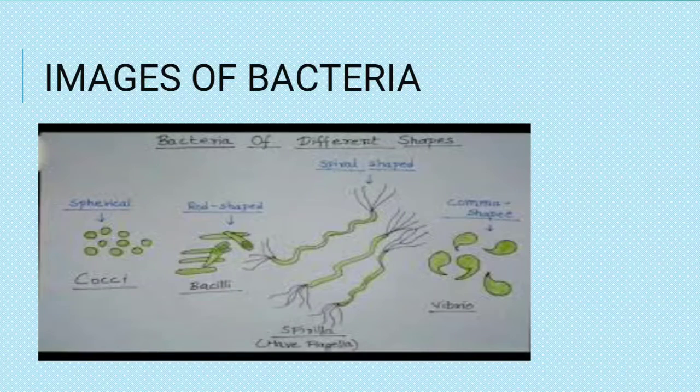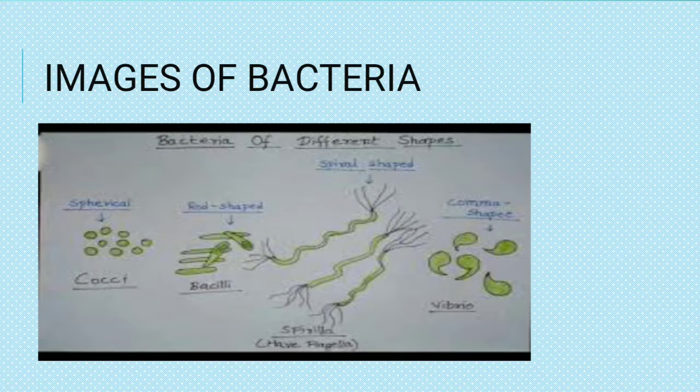First we will discuss about bacteria. Bacteria are very small and the simplest living organisms. They are single-celled organisms found almost everywhere. They are found in four different shapes. The first is bacilli — rod-shaped — with the example Escherichia coli. The second is cocci, with a spherical shape, example Streptococcus pneumoniae.